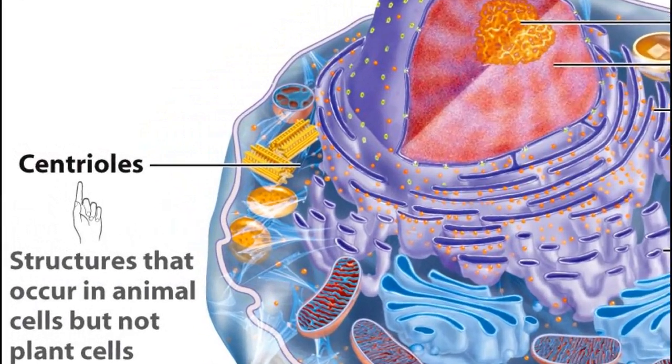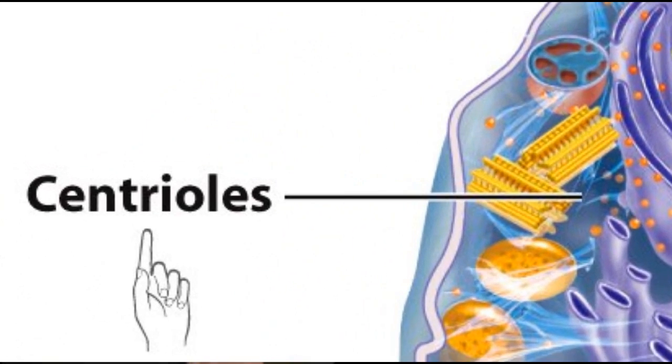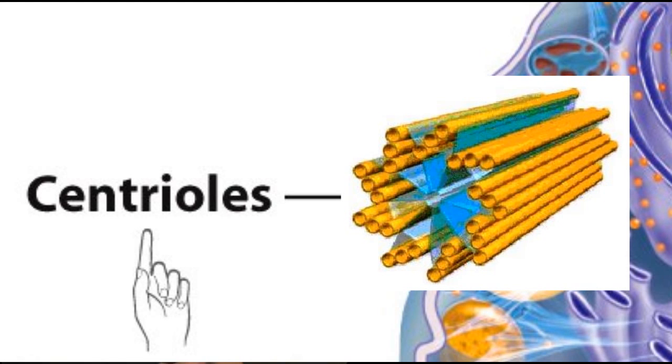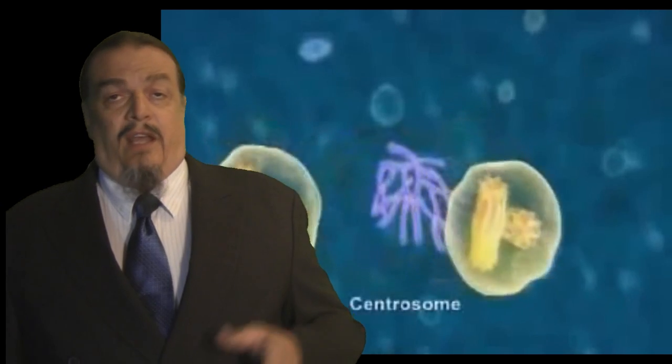Centrioles are organelles found in pairs at right angles to each other. Each is a collection of cylinders in a unique nine-in-three configuration. They're not really visible until it's time for the cell to divide.